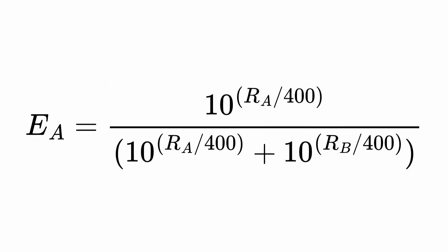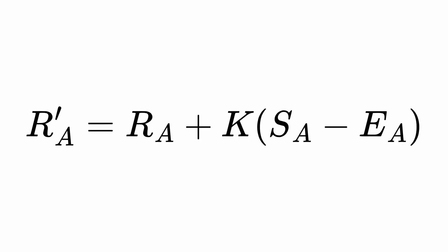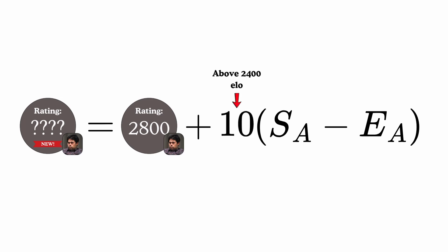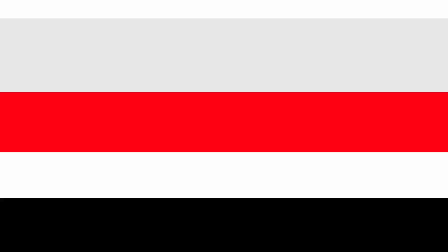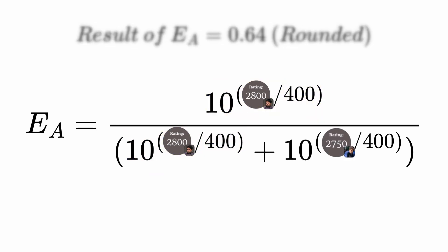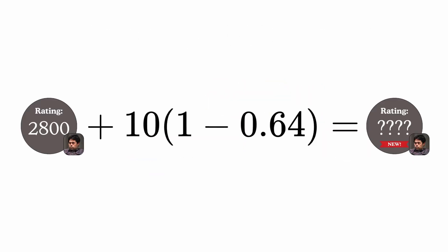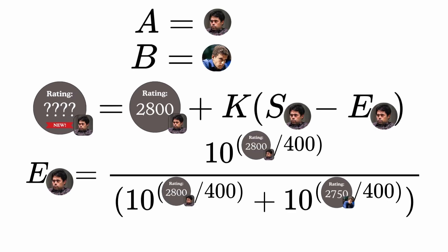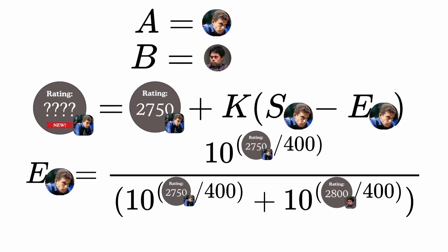If you calculated all that, you're basically done with updating Hikaru's ELO. It reads out like this: the new ELO score of Hikaru equals Hikaru's current score plus 10 — because Hikaru's ELO is above 2400 — times 1 because Hikaru won, minus the expected outcome, which is 10 to the power of Hikaru's rating divided by 400, divided by that result plus the result of Danya's equivalent. So finally, Hikaru's current score plus 10 times 1 minus Hikaru's expected outcome calculation equals Hikaru's updated ELO. Finding the opponent's updated ELO is easy — wherever Hikaru appears in the equation, replace it with Danya and vice versa. And yeah, that's basically it.